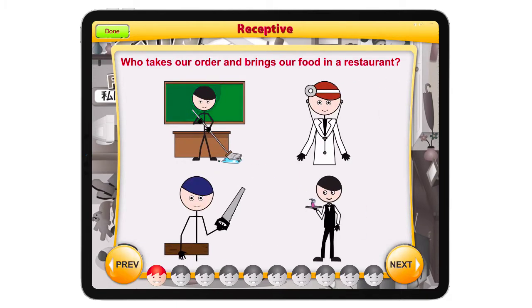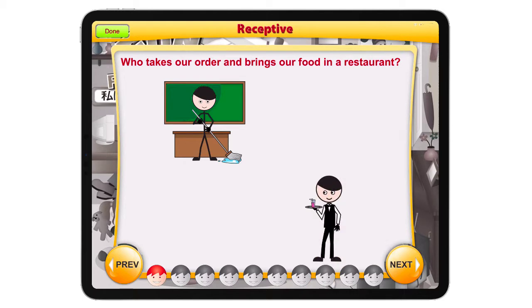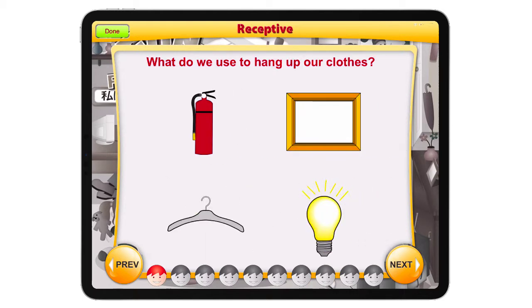Who takes our order and brings our food in a restaurant? This is a type of question related to occupation. Let's see what happens when we click on the wrong item — it gets removed so that it becomes easier for the child to select the answer. What do we hang up our clothes on?